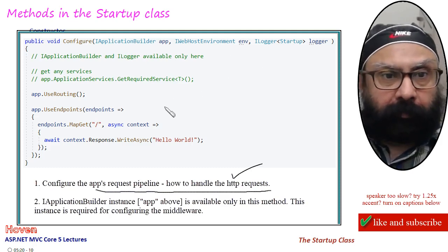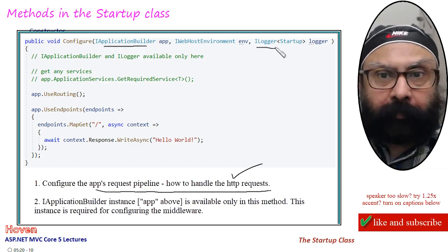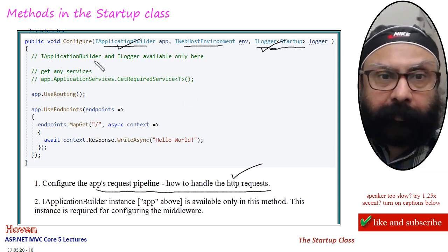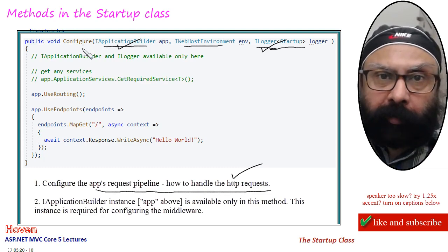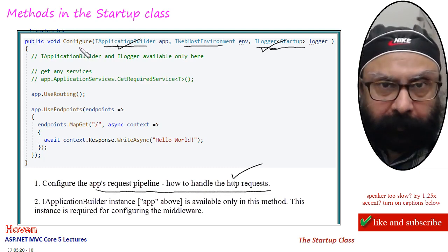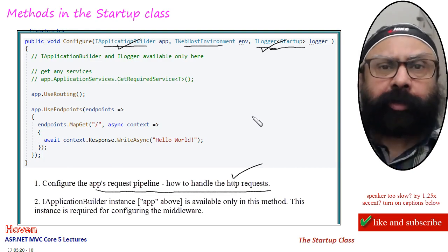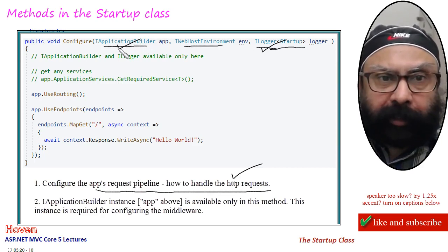What are the arguments? First, IApplicationBuilder and ILogger — if you remember from a previous lecture — and IWebHostEnvironment. IApplicationBuilder and ILogger are available only in this Configure method signature. You will not get them in the constructor, and you will not get them in ConfigureServices. So the Configure method is the only place where you can get these two instances.